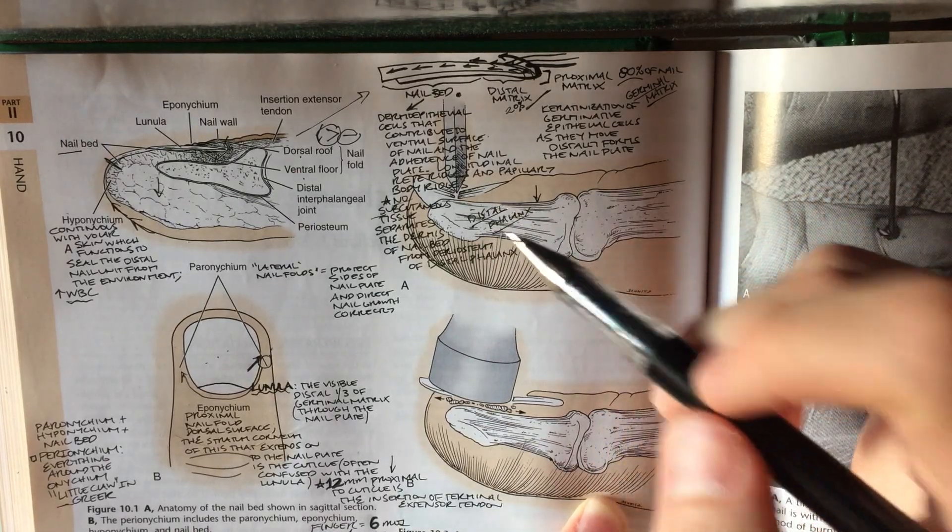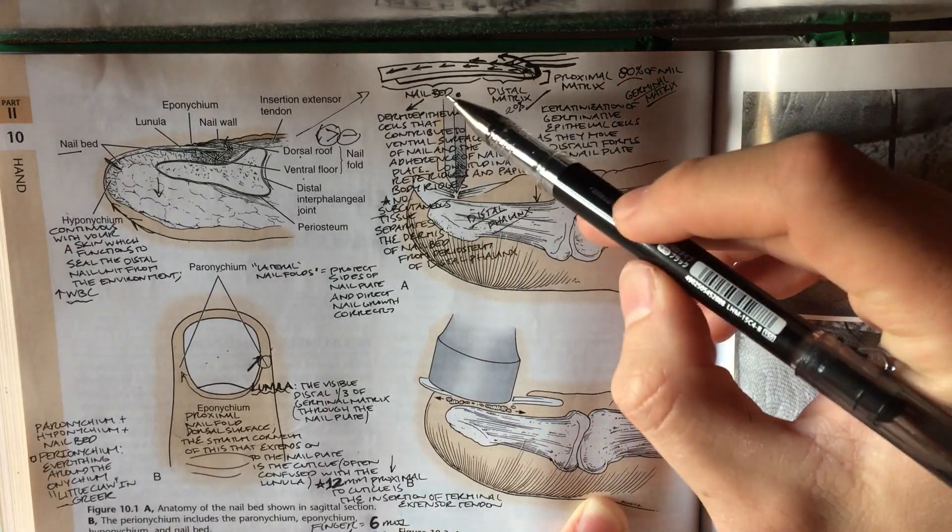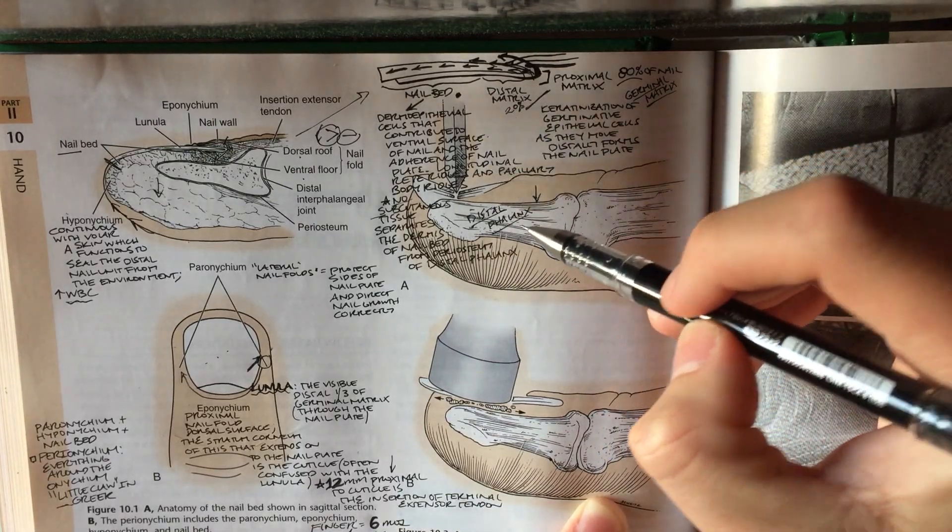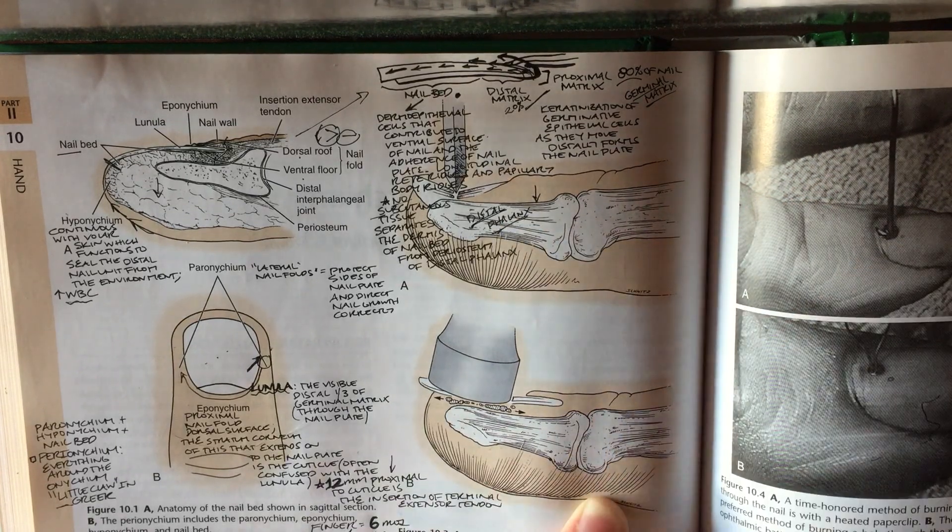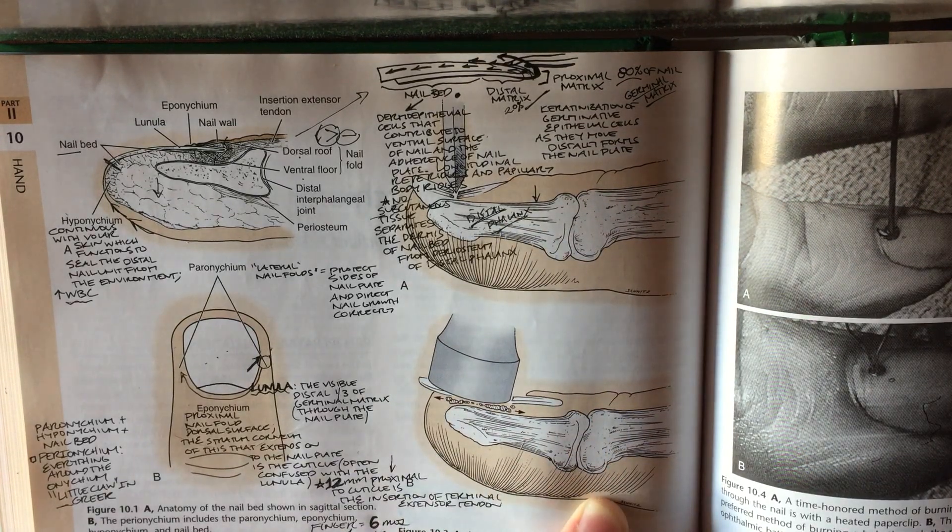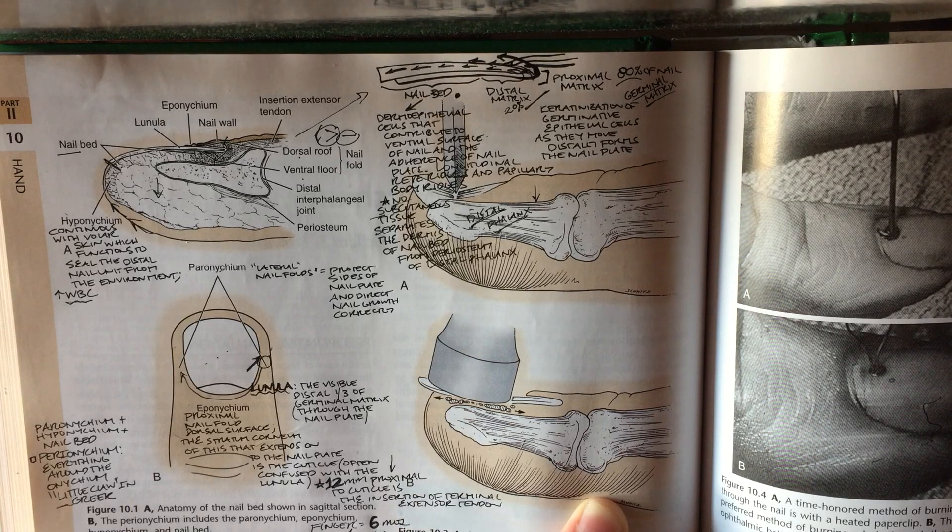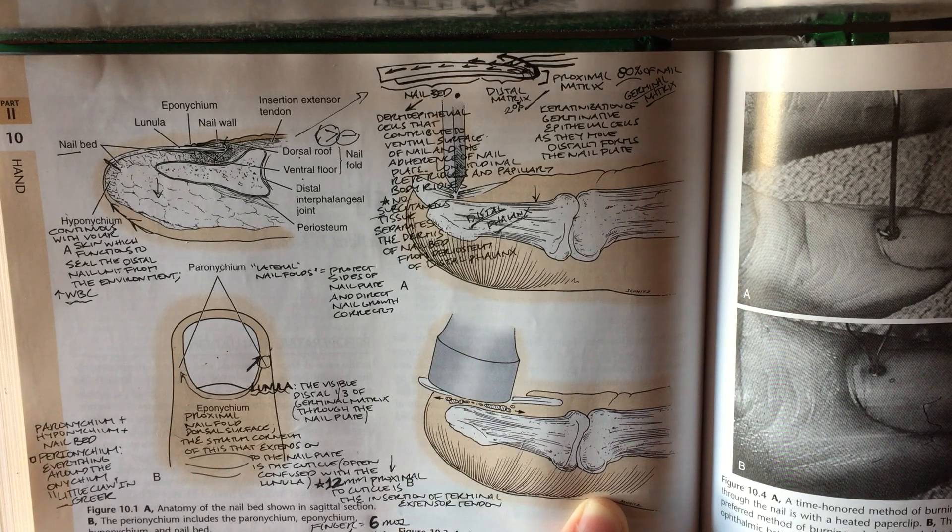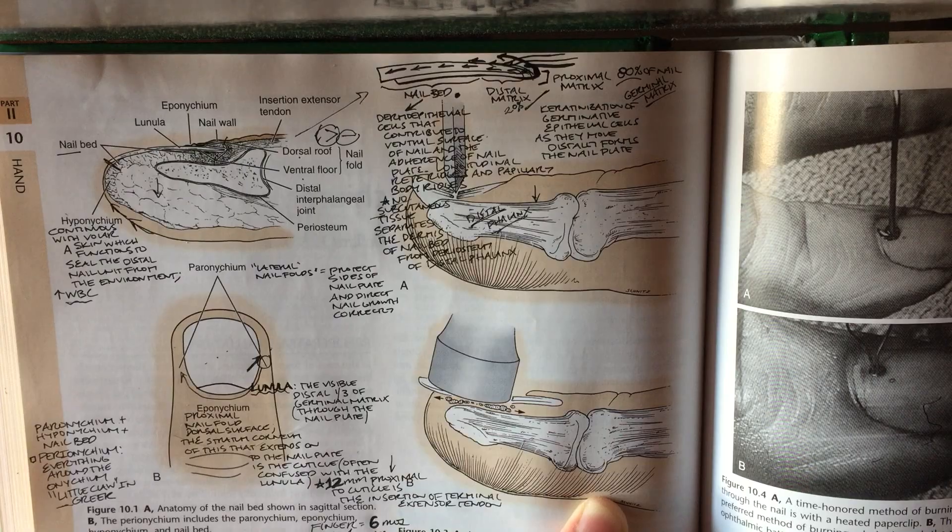What's important to note is that there's no subcutaneous tissue that separates the nail bed or sterile matrix from the periostin of the distal phalanx. So therefore, any fracture that's sitting below a laceration of the nail bed is therefore defined as an open fracture by default.